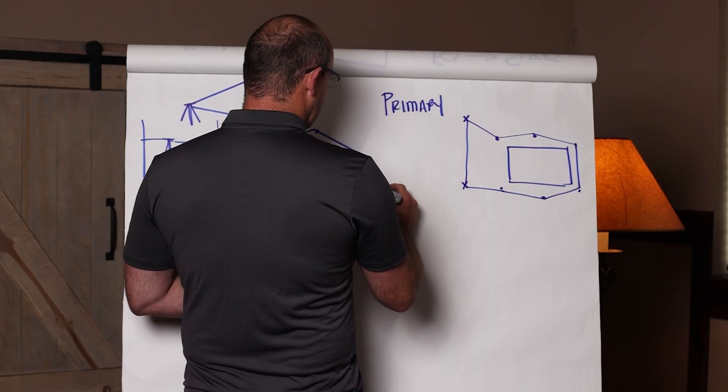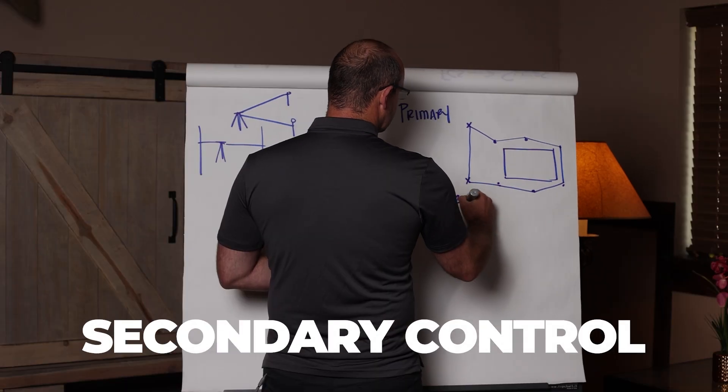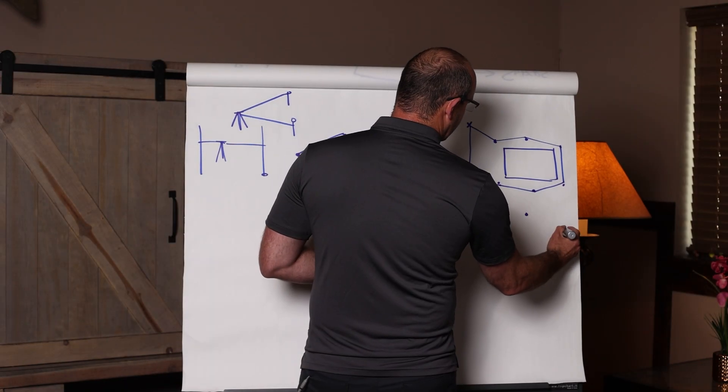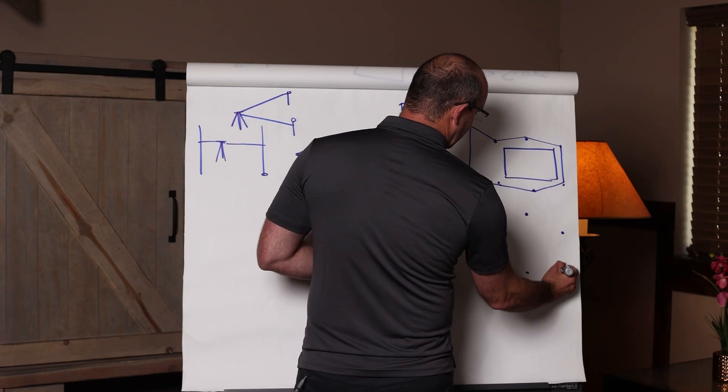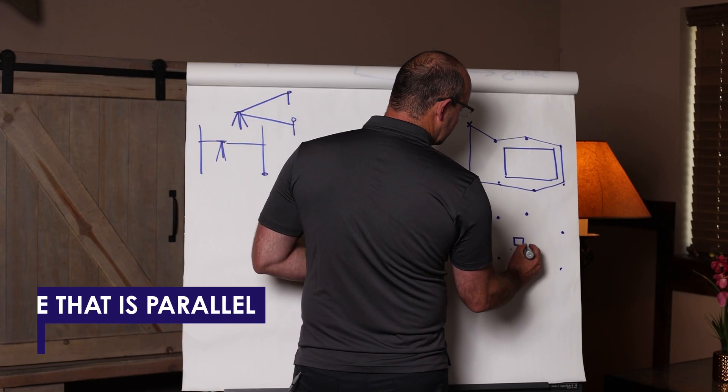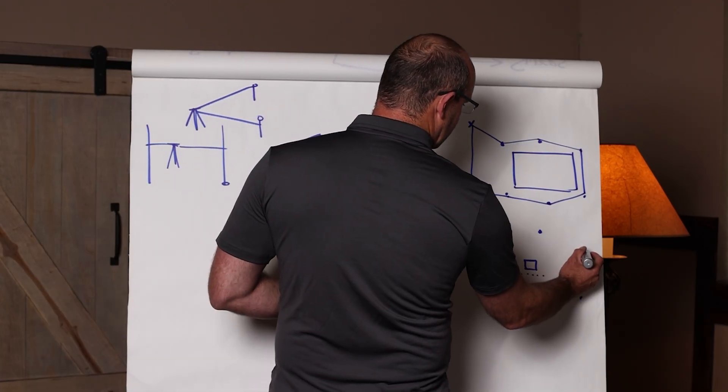The purpose there is so that you can do what's called secondary control. And this secondary control is where you take these monuments from your primary control and you know, hey, I've got a building that I need to lay out over here and I want to have a baseline that's parallel to the grid lines.